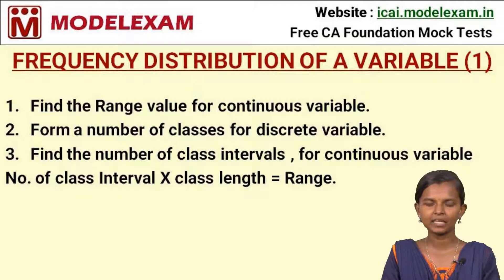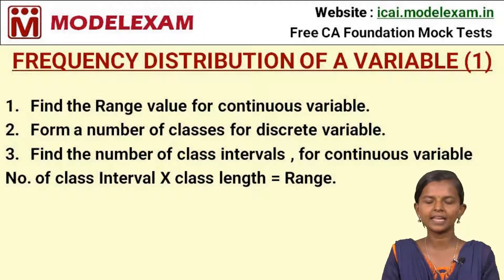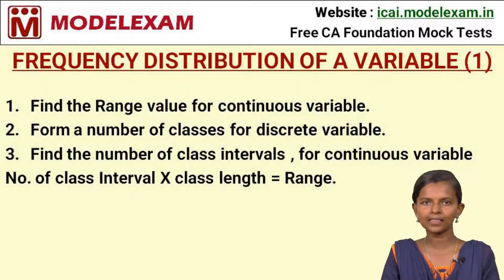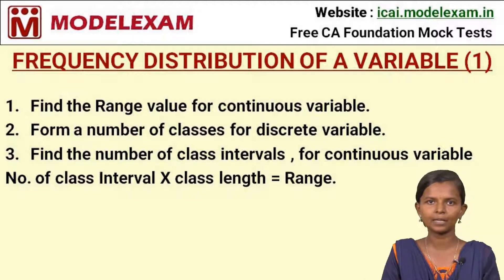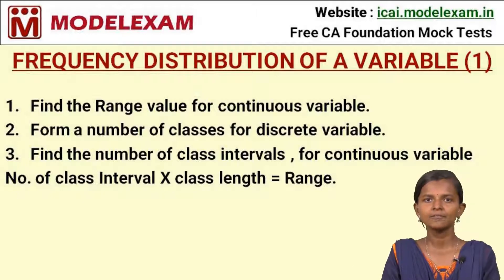The frequency distribution of a variable is done using six steps. The first step is finding the range value of that variable — that is, the difference between the largest value and the smallest value in the data. The second step is finding the number of classes. The third step is finding the number of class intervals using the formula: number of class intervals × class length = range.